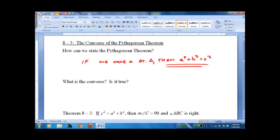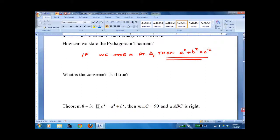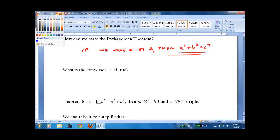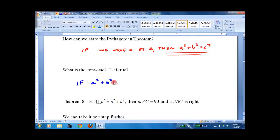Go backwards. The converse. What's the converse? It would be if a-squared plus b-squared equals c-squared, then we have a right triangle. Is it true? Yes. So I give you a triangle with sides 3, 4, and 5. We would be able to say, yes, that's a right triangle.